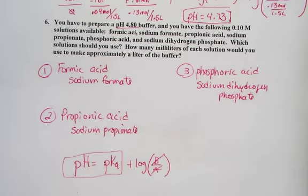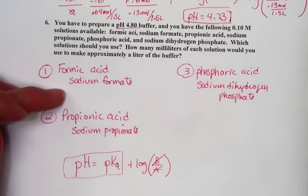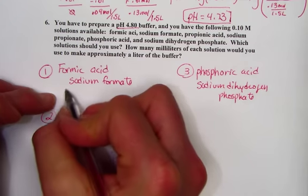Let's begin by looking up Ka values of each of these acids in Appendix D. Formic acid, here it is.